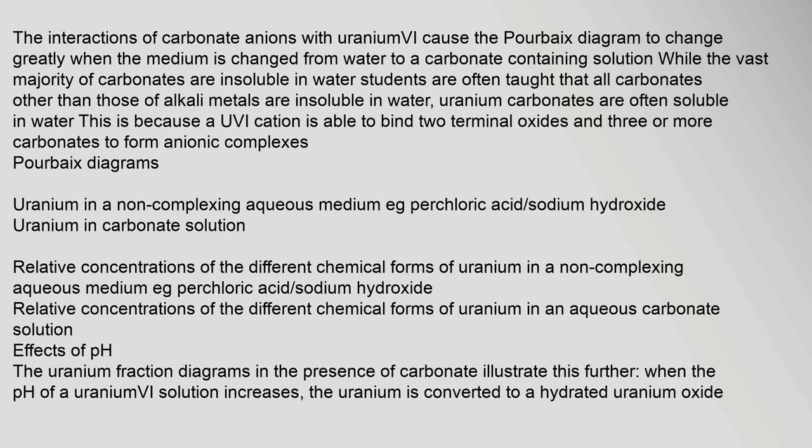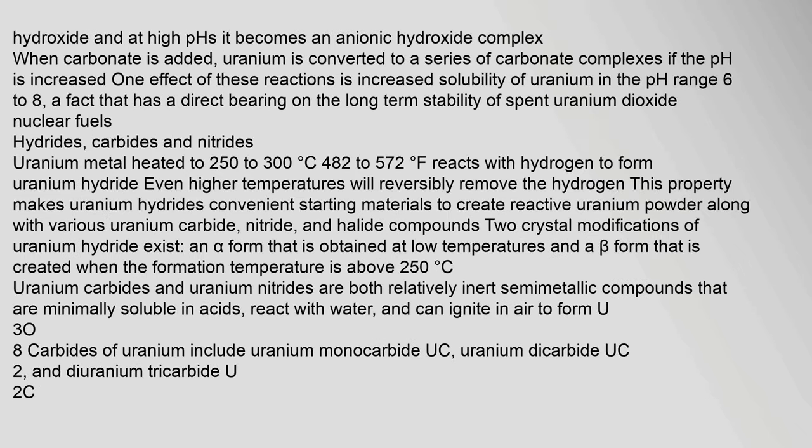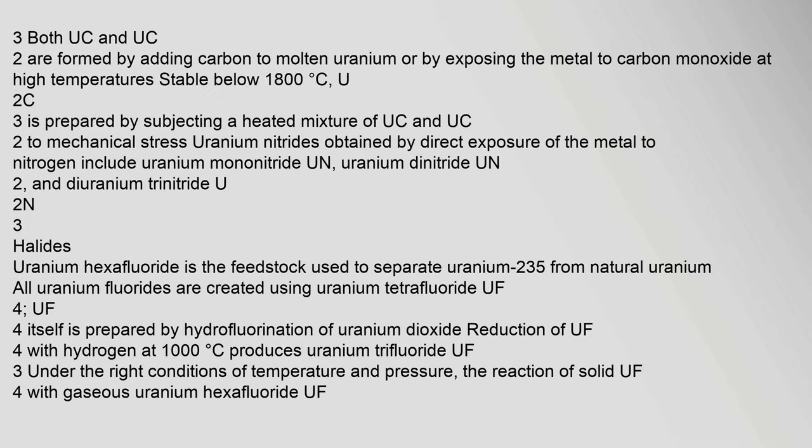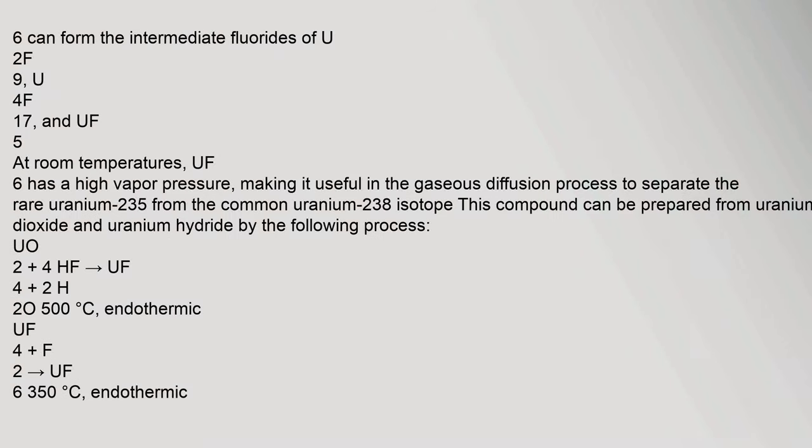The uranium fraction diagrams in the presence of carbonate illustrate that when the pH of a uranium(VI) solution increases, uranium is converted to a hydrated uranium oxide hydroxide, and at high pH with carbonate added, it becomes an anionic hydroxide complex converted to a series of carbonate complexes. One effect of these reactions is increased solubility of uranium in the pH range 6 to 8, a fact that has a direct bearing on the long-term stability of spent uranium dioxide nuclear fuels. Uranium metal heated to 250–300°C reacts to form uranium hydride.